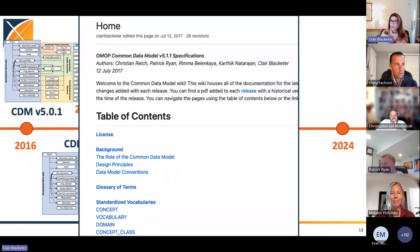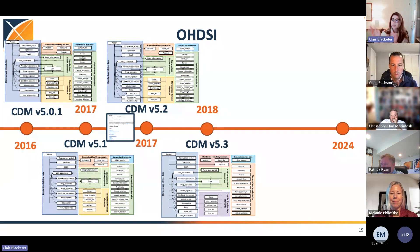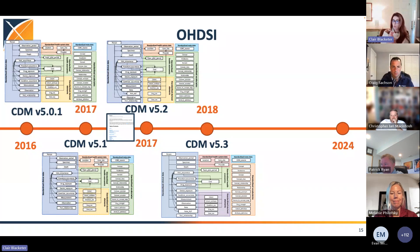Now, there were some downsides to using a GitHub wiki. But in 2018, we were using the GitHub wiki, and it was working well for us, and we released version 5.3.